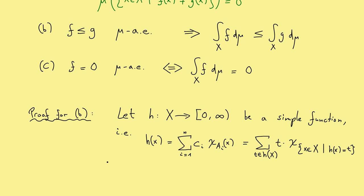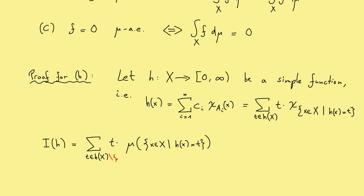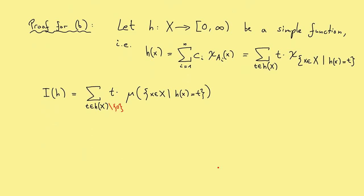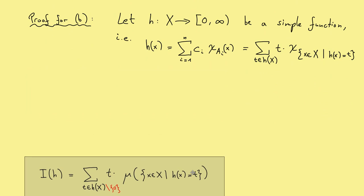The integral can then easily be written down. As always, it is defined by our sum, and now the summation goes over t in the image of h. Then simply t times the measure of this set: mu of all x that fulfill h equals t. And to make it a little bit easier, you can always ignore the zero — you omit zero as an element in the image, because you don't change anything in the integral by multiplying by zero. The question is now: what happens if we change this simple function on a set which has measure zero?